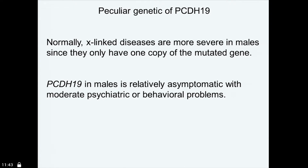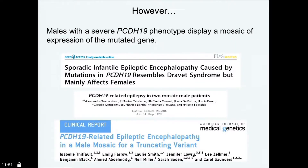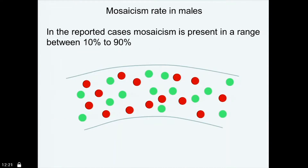PCDH-19 has a very, very peculiar genetics, which has been demonstrated — as Nicola has shown — by two very recent papers. There are very few cases in which males actually display a mosaic, and these males actually have a phenotype that resembles very much the phenotype of the females. This is an indication that the presence of two different systems of neurons — wild-type and mutated — are essential for at least some features of the disease.